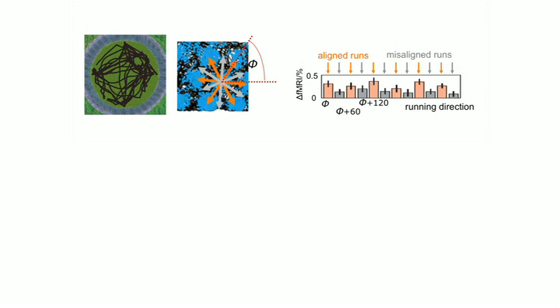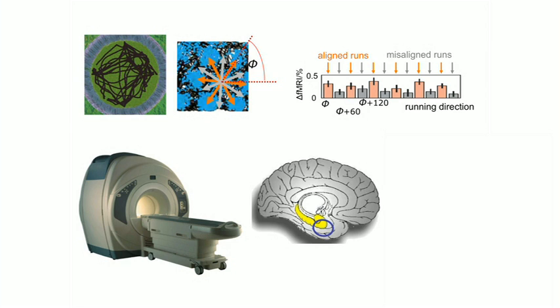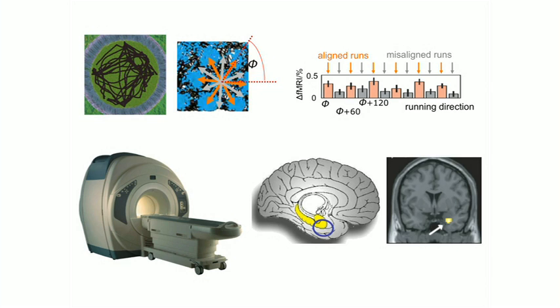So we can put people in an MRI scanner and have them do a little video game like the one I showed you, and look for this signal. And indeed, you do see it in the human entorhinal cortex, which is the same part of the brain that you see grid cells in rats.